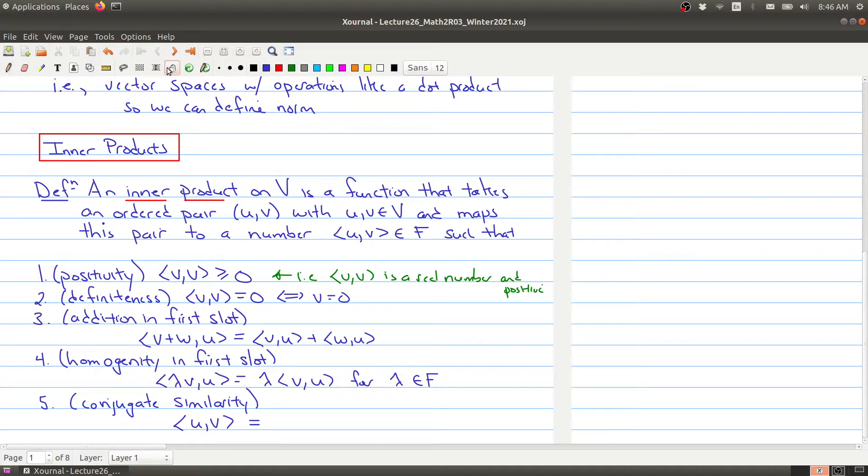And the last property that we have is what's called conjugate similarity. So this is where we have to really pay attention to the order because if you have u, v, it gets sent to one number, but if you were to switch the order around, what you would get would be the complex conjugate of the number that you started with. So this is what we would call an inner product - a function that has these five properties.